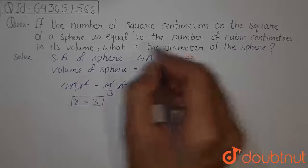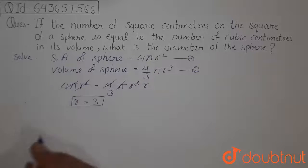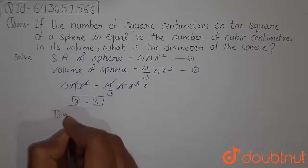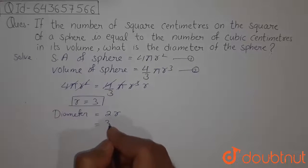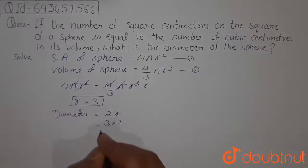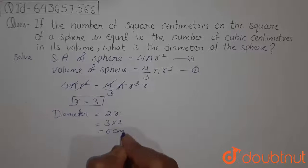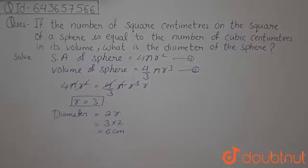So it is given that we have to find the diameter. Diameter equals 2 times the radius. So 3 times 2, that is 6 centimeters. 6 centimeters is the diameter. This is our answer.